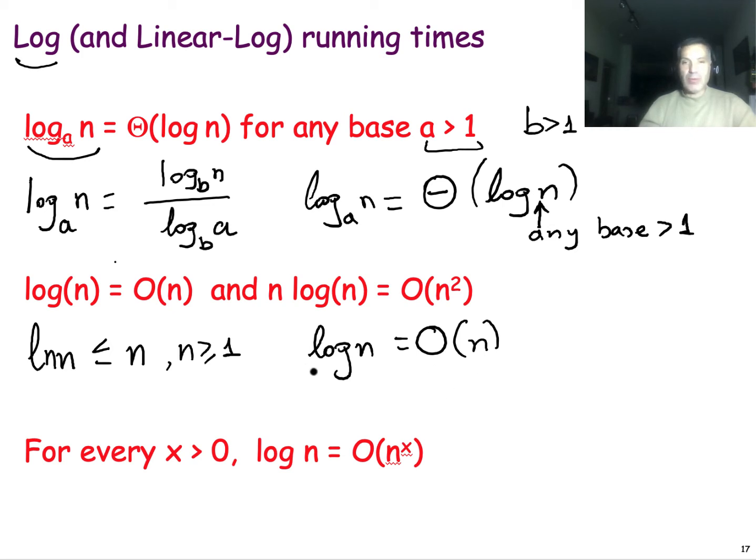Similarly, if we multiply both sides by n, we get that n log n, which is the log linear running time that we see in merge sort, is big O of n^2. Finally, we can say more generally that the logarithmic function is asymptotically upper bounded by any power of n, even if this exponent x is lower than 1, as long as it is positive.